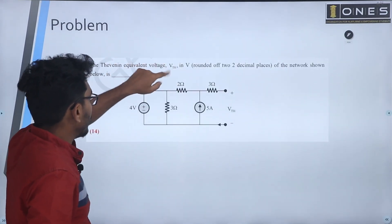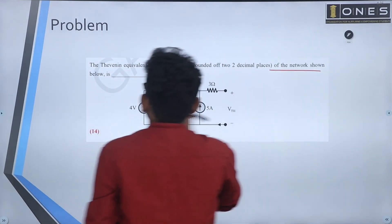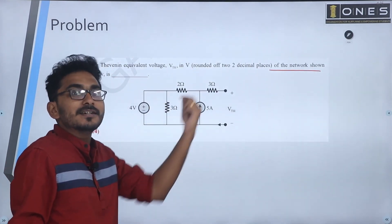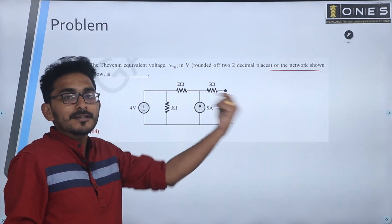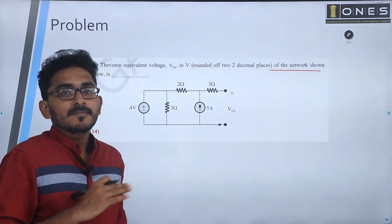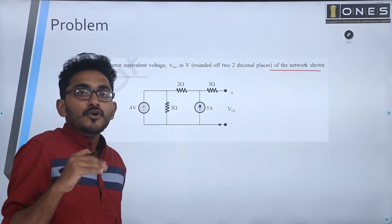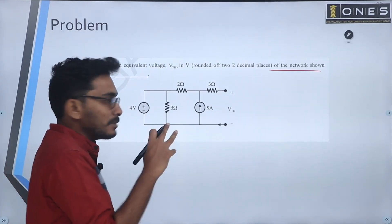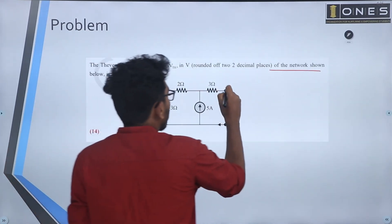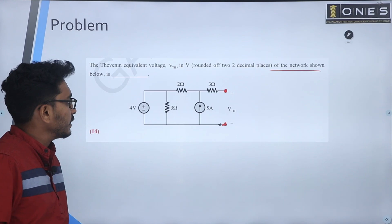Find the Thevenin's equivalent voltage VTH in volts, rounded off up to two decimals of the network shown. We need to calculate the open circuit voltage at the terminal. This is the open circuit terminal.